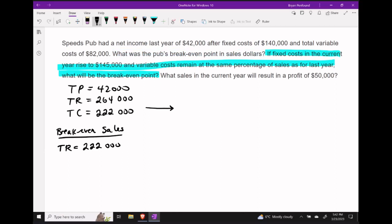Now let's consider the hypothetical scenario, where in the current year, fixed costs are going to rise to $145,000. Variable costs are going to remain the same percentage of sales as for last year. And then we want to consider what our break-even point in dollars is going to be again.